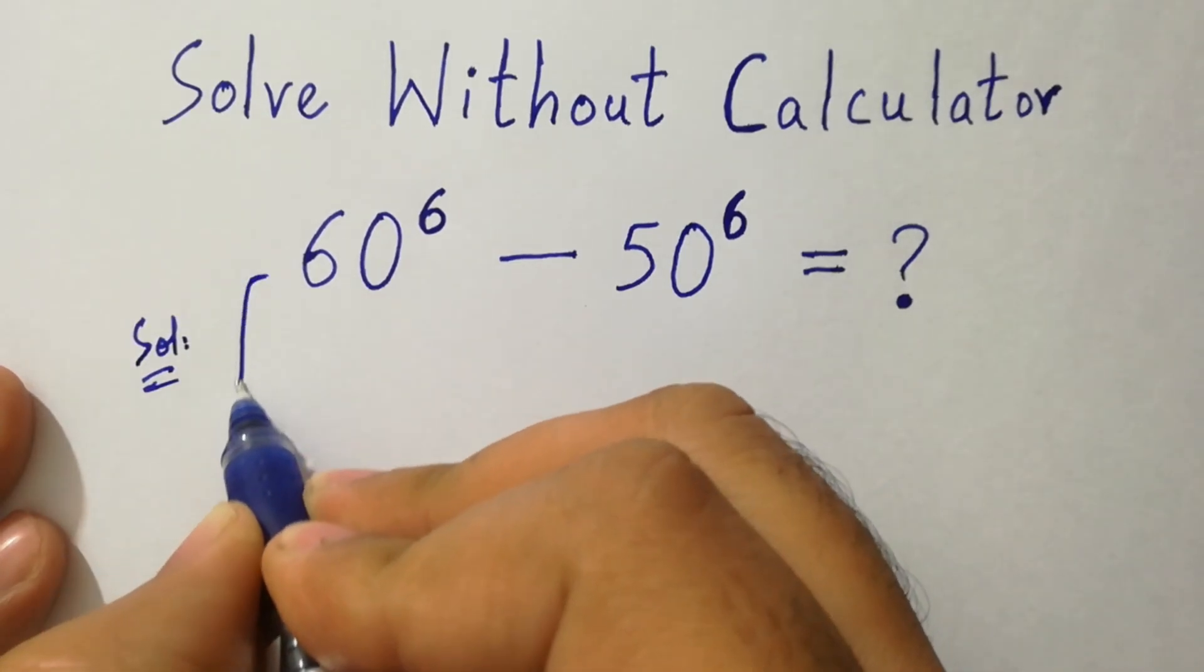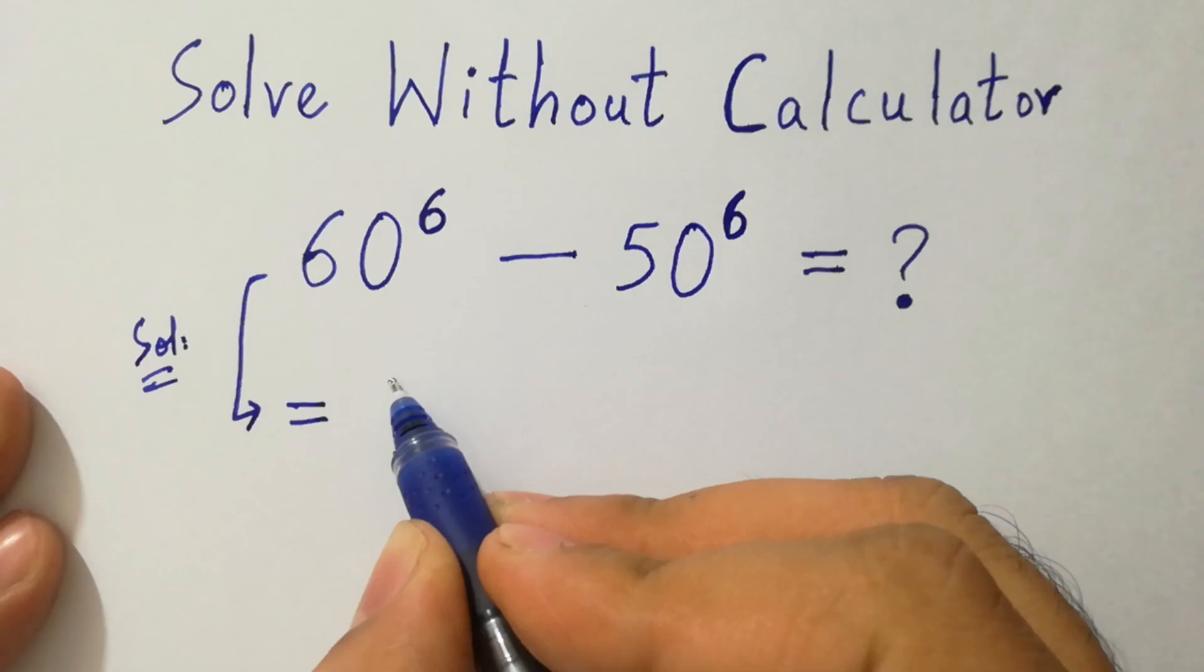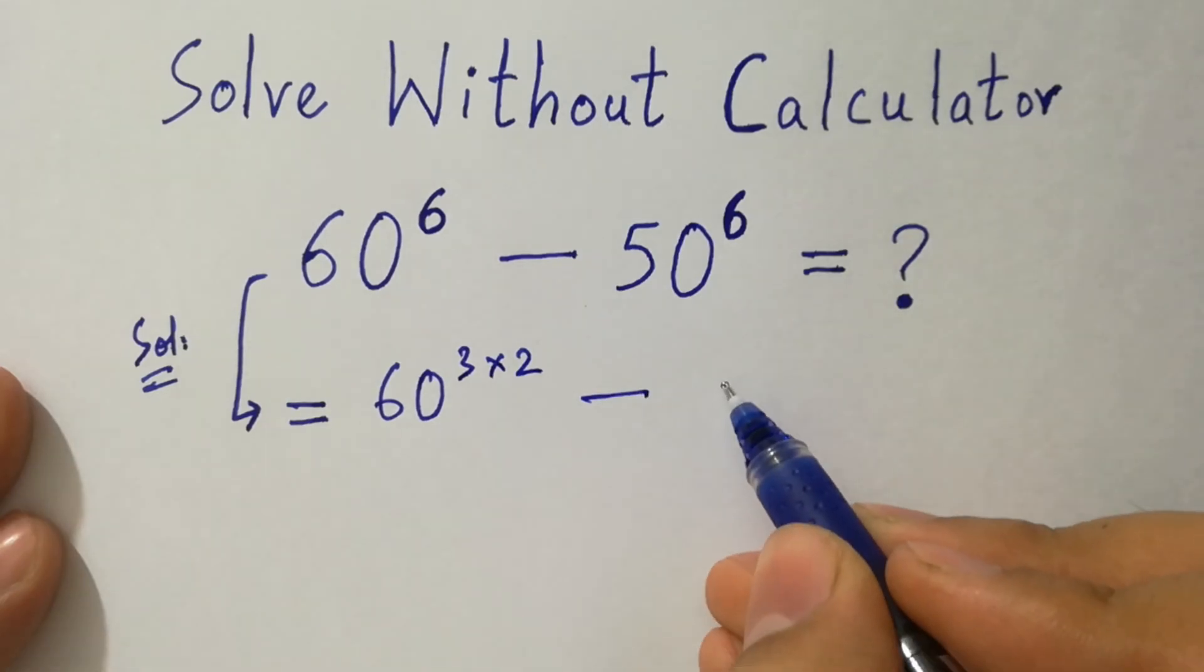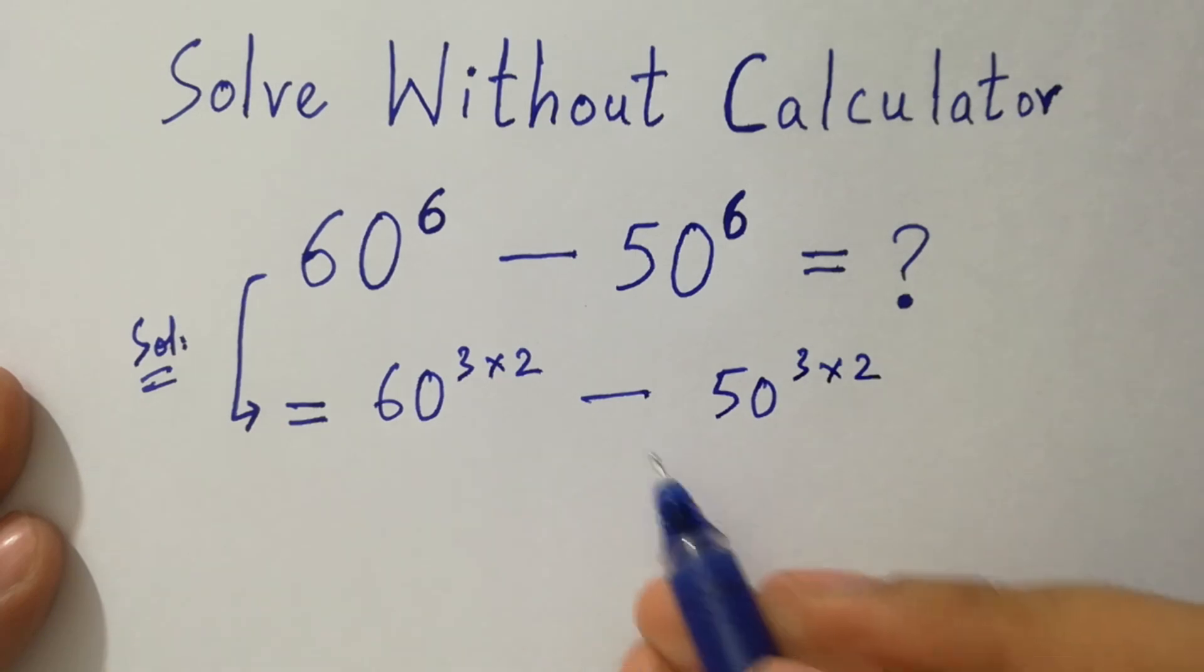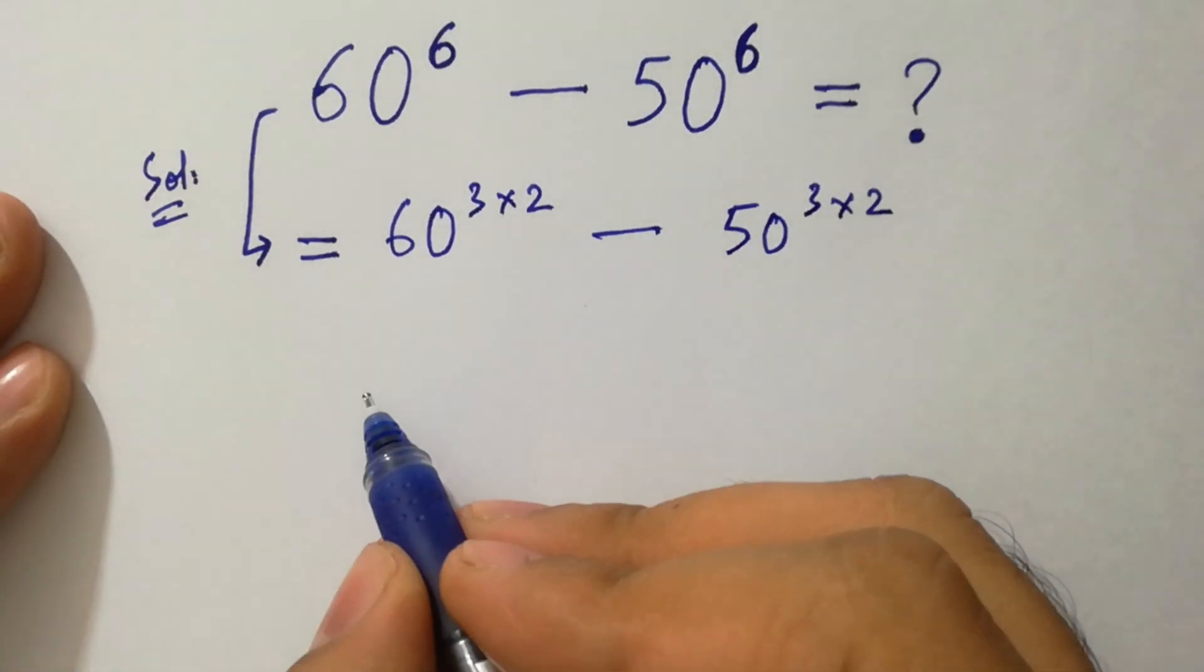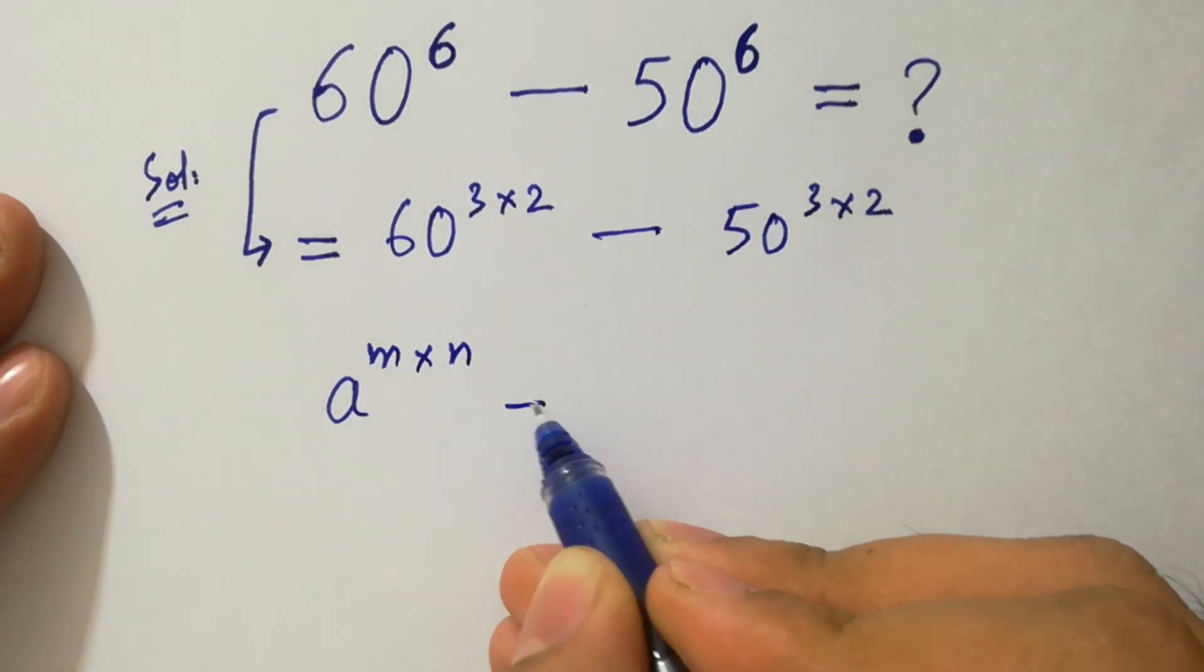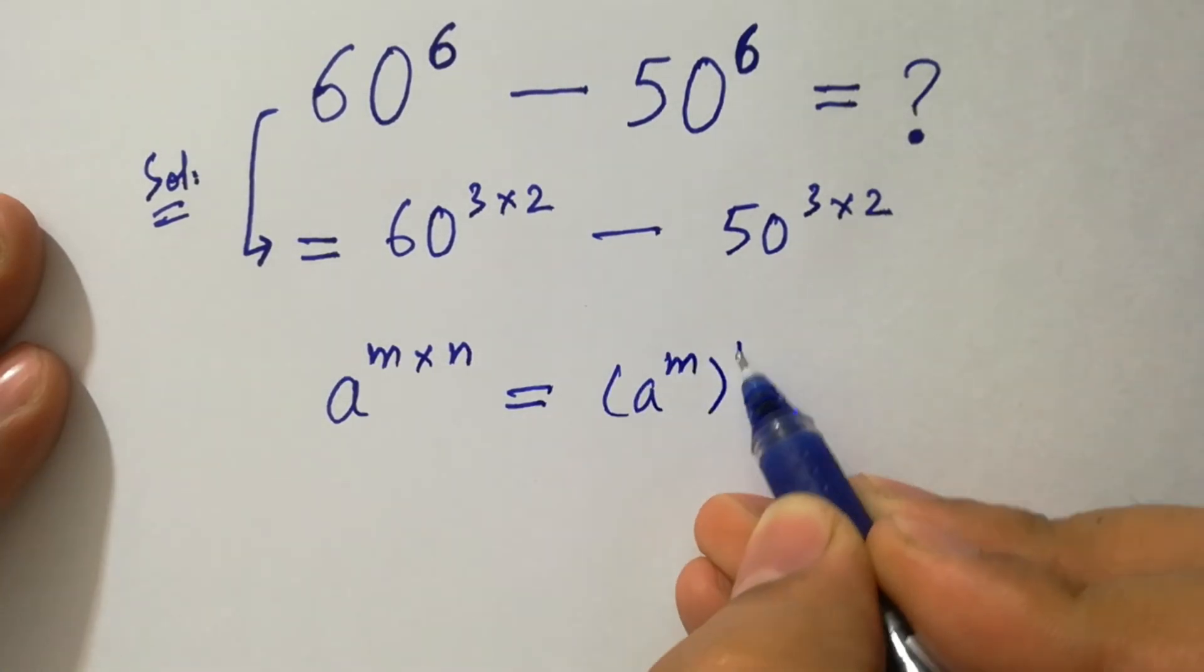This problem is the same as 60 to the power 3 times 2 minus 50 to the power 3 times 2, since 3 times 2 is 6. Now we know that a to the power m times n equals a to the power m to the whole power n.